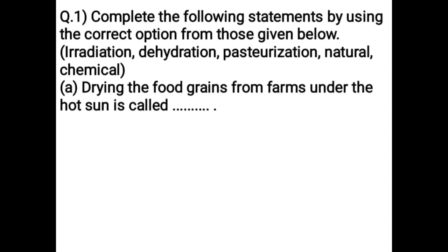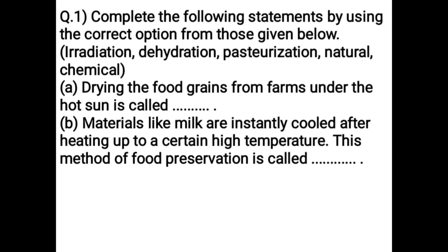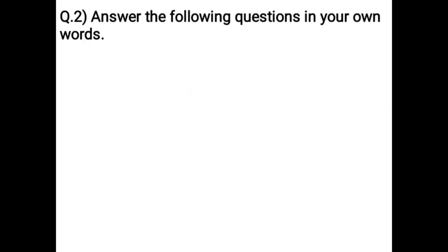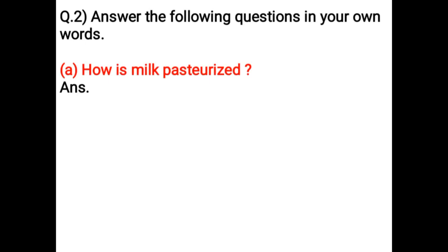Complete the following statements using the correct option. Drying food grains from farms under the sun is called dehydration. Materials like milk are instantly cooled after heating up to a certain high temperature — this method of food preservation is called pasteurization. Salt is a natural type of food preservative. Vinegar is a chemical type of food preservative.